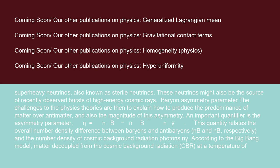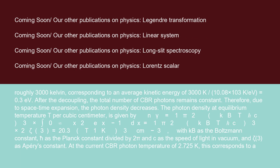According to the Big Bang model, matter decoupled from the cosmic background radiation (CBR) at a temperature of roughly 3000 Kelvin, corresponding to an average kinetic energy of 3000K/(10.08×10³K/eV) ≈ 0.3 eV. After the decoupling, the total number of CBR photons remains constant. Therefore, due to space-time expansion, the photon density decreases.